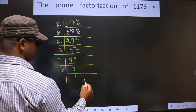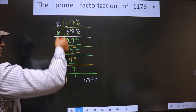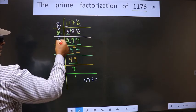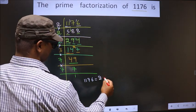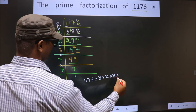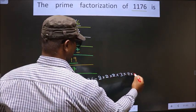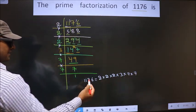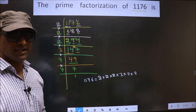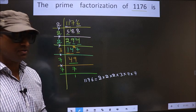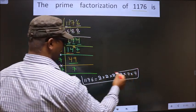So the prime factorization of 1176 is the product of these numbers, that is 2×2×2×3×7×7. This is also called the product of prime numbers of 1176. So this is our answer.